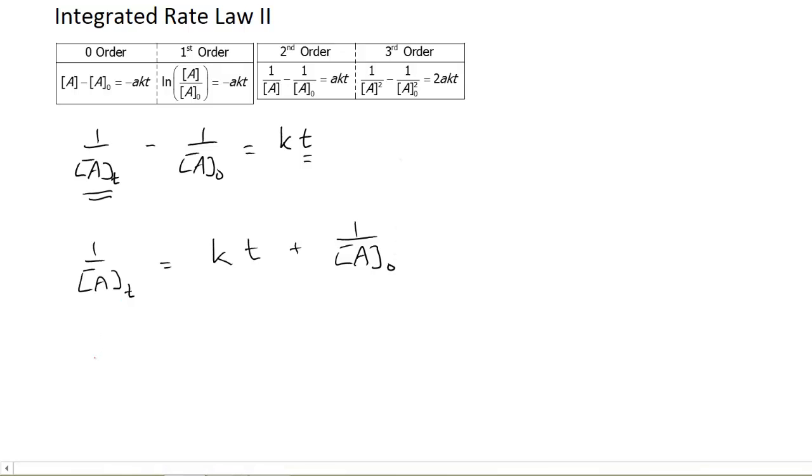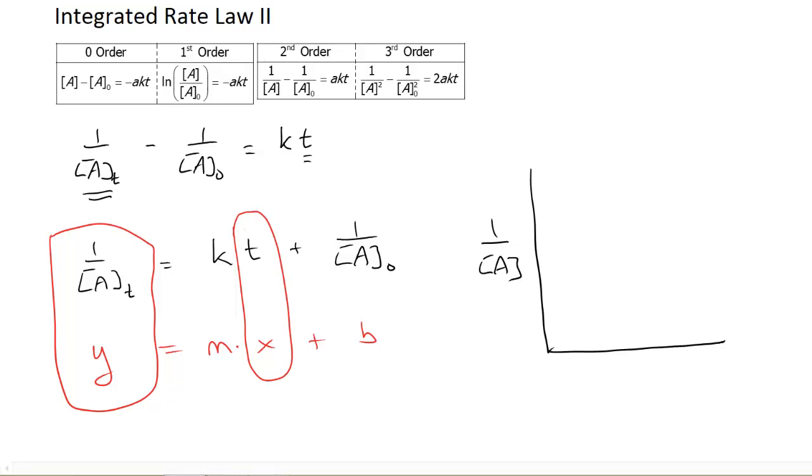I can see that this is in the form of a line: y equals m times x plus b. What this says is my y-axis is 1 divided by the concentration of A. So if I make my graph, my y-axis will be 1 over [A]. Once again, time is my x-axis.